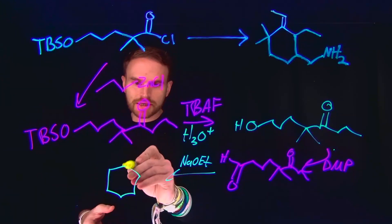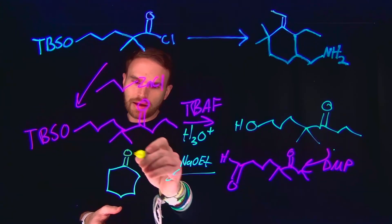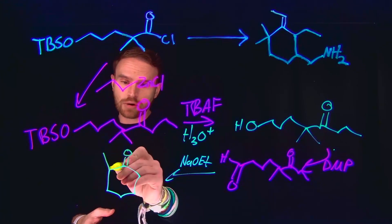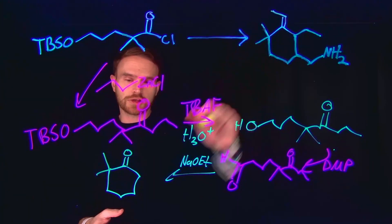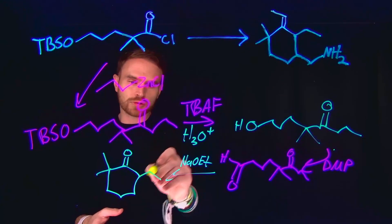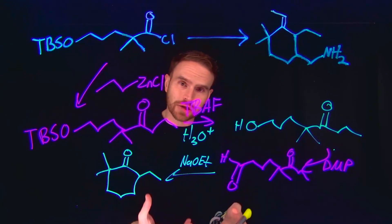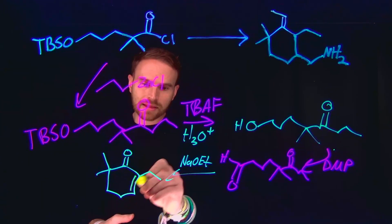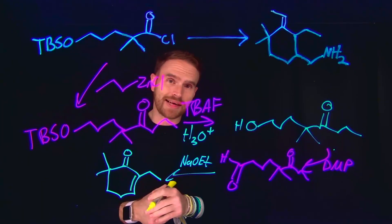And since it's a condensation, that's going to give us a ketone at this position. We're going to end up with both of our methyl groups at this position, and we still have this alkyl chain. Since it's a condensation reaction, we actually liberate water and leave behind an alkene.